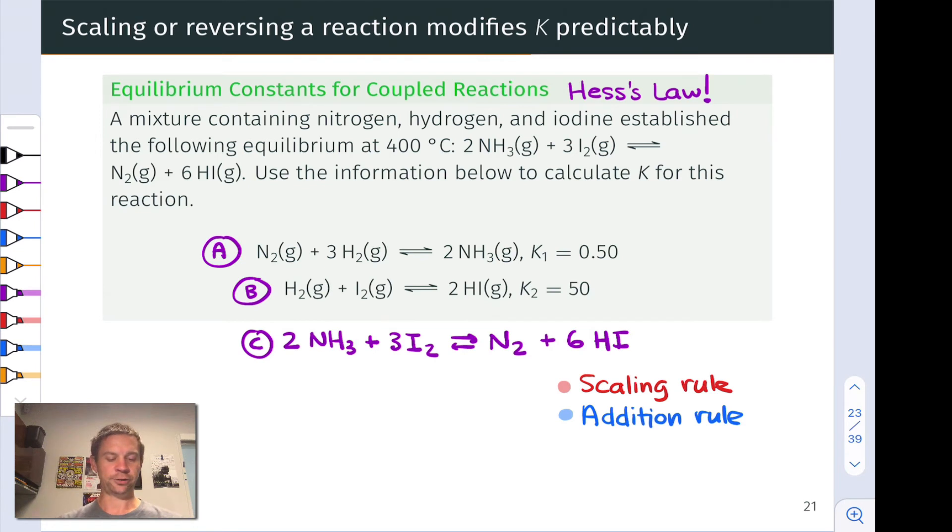And our goal is to use this information in combination with these operations of addition, scaling, and reversing the reactions to determine the equilibrium constant for reaction C. And in this particular problem, we're going to make use of the scaling rule, which I'll highlight in red, and the addition rule, which I'll highlight in blue. But first and foremost, we're going to apply the same conceptual process that we did way back when thinking about Hess's law as applied to enthalpy and entropy changes.